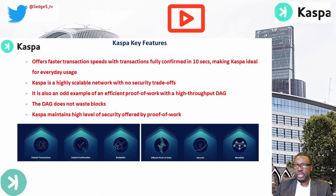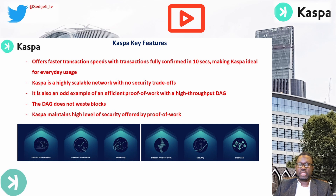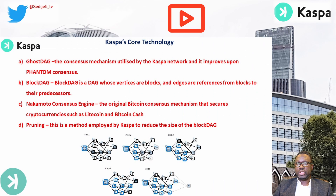Key features of Casper: it offers faster transaction speeds with transactions fully confirmed within 10 seconds, making it ideal for everyday use. Casper is a highly scalable network with no security trade-offs. It is also a rare example of an efficient proof-of-work system with a high-throughput DAG that has no wasted blocks. Casper maintains the high level of security offered by proof of work.